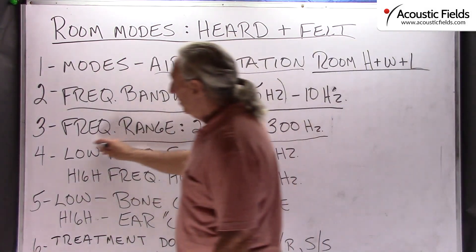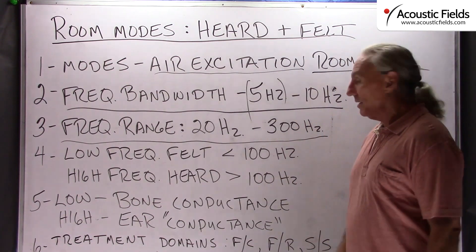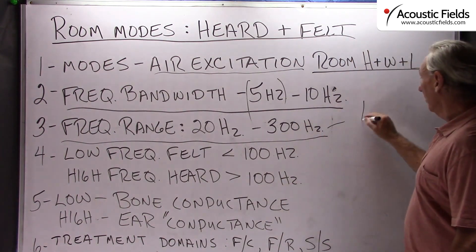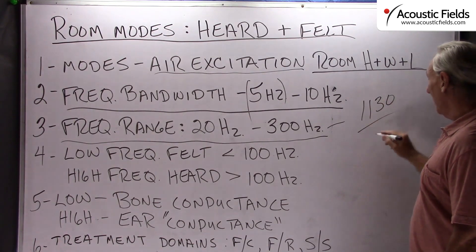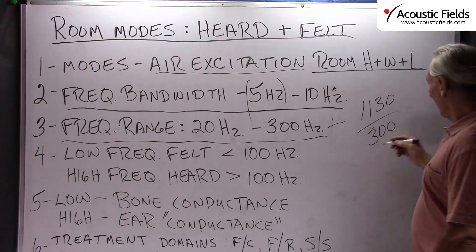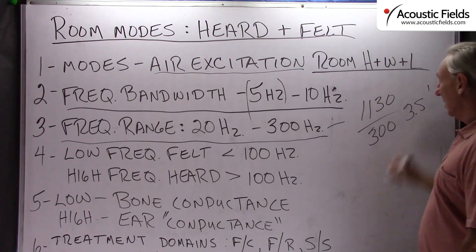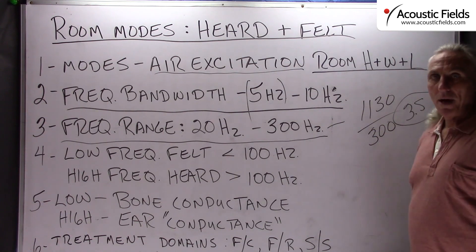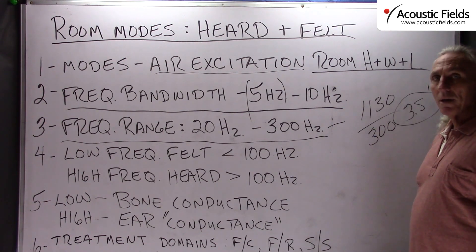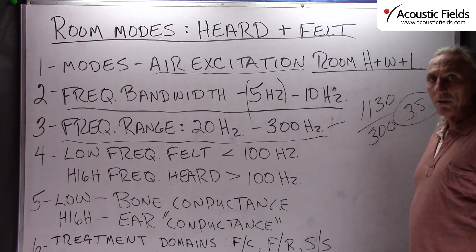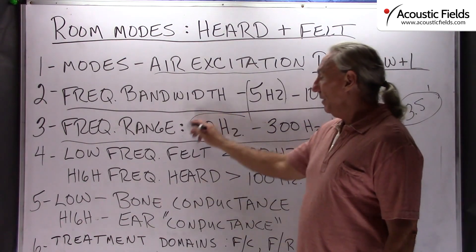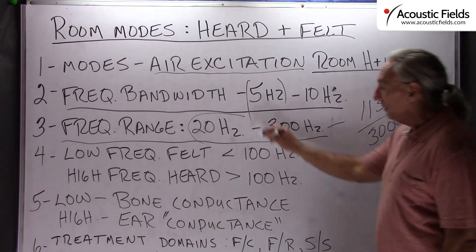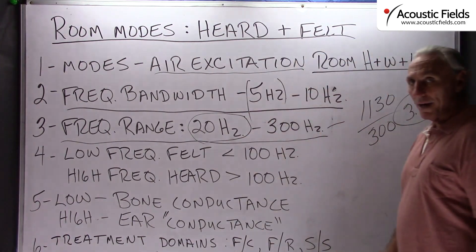Most of these modes occur in small room acoustics in the frequency range from twenty cycles to three hundred cycles. If we take the speed of sound divided by three hundred, we get about three and a half feet — so there's plenty of distance for a three-and-a-half-foot wavelength to live in the room without causing problems. But twenty-cycle waves are a completely different story — fifty to sixty feet of energy. So we have to figure out how to deal with that too.